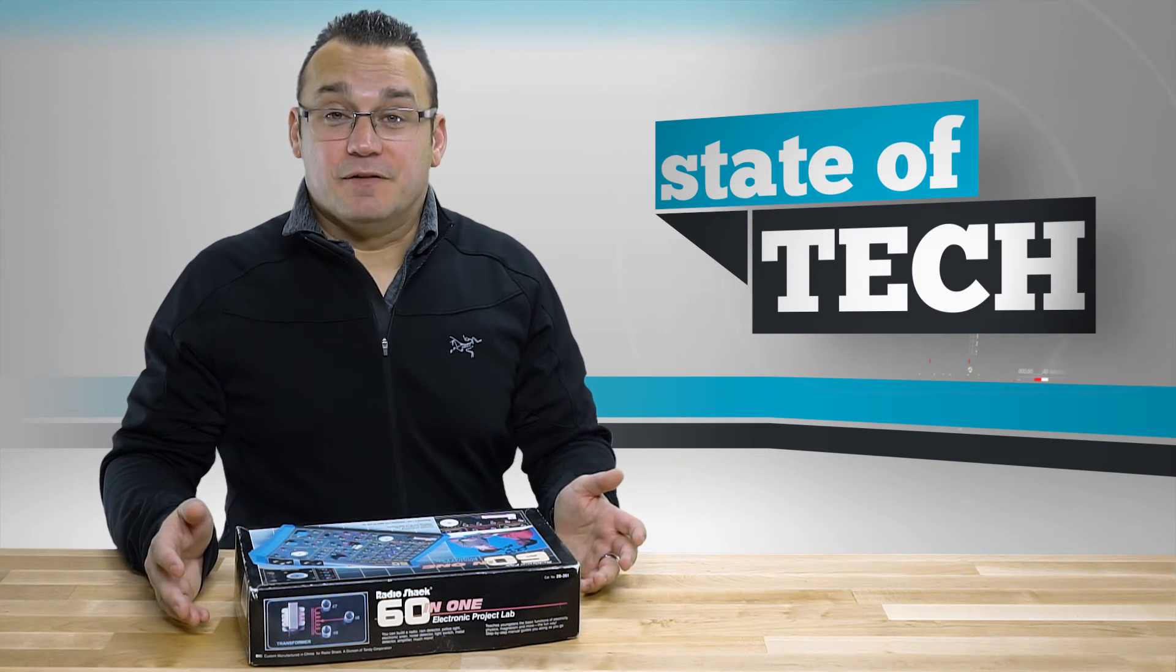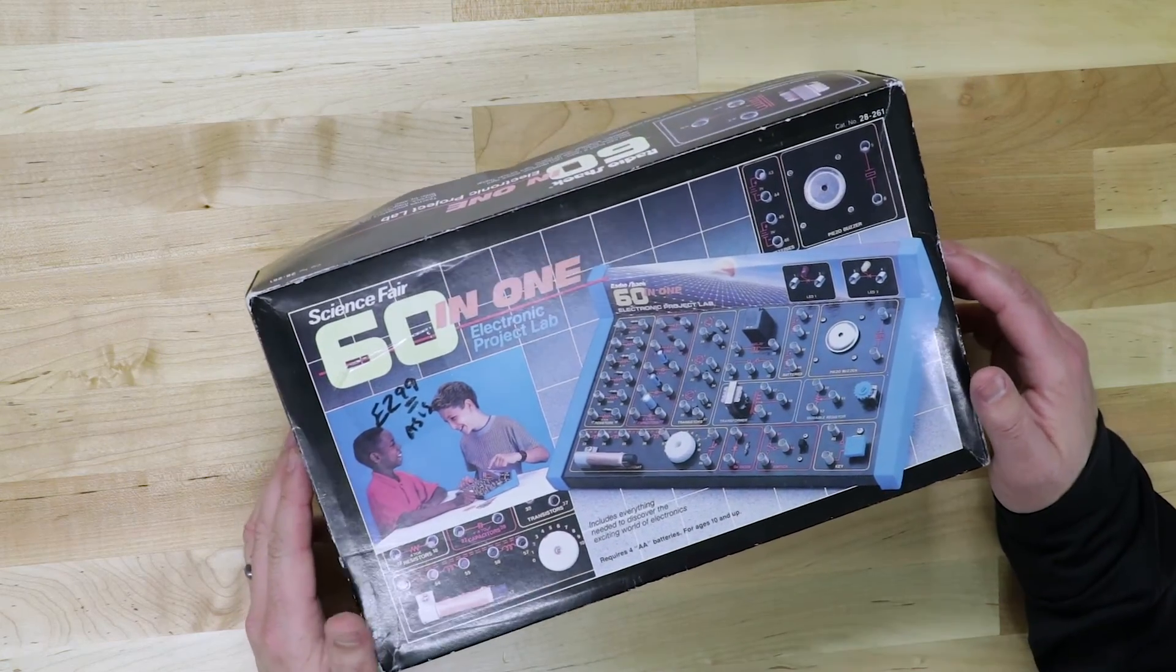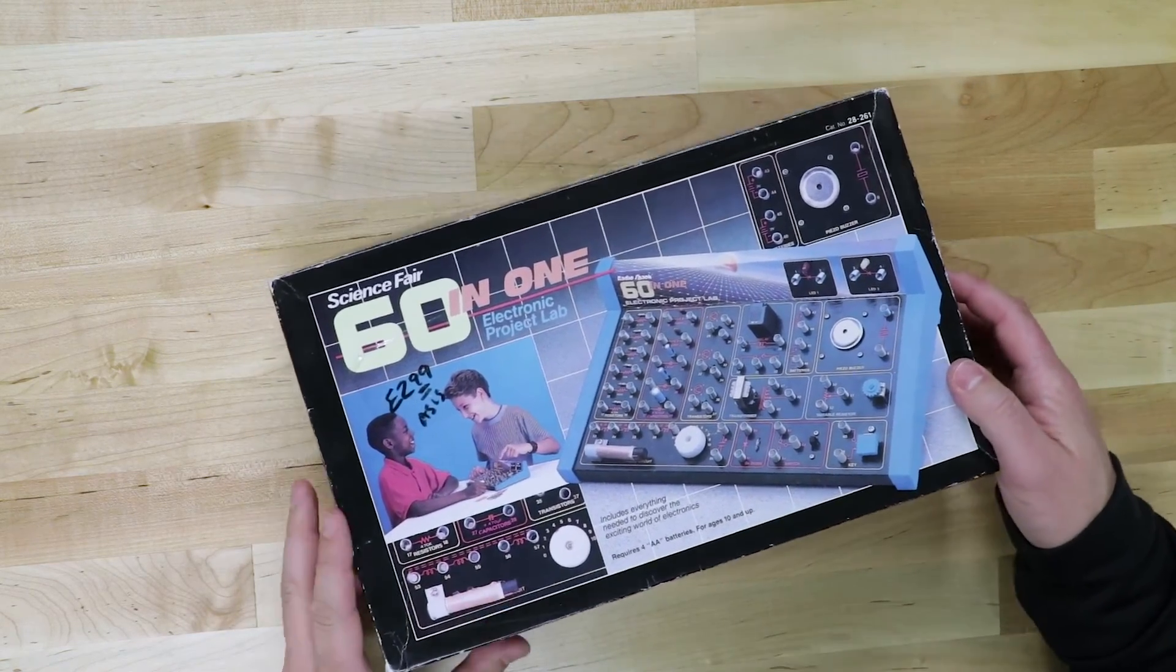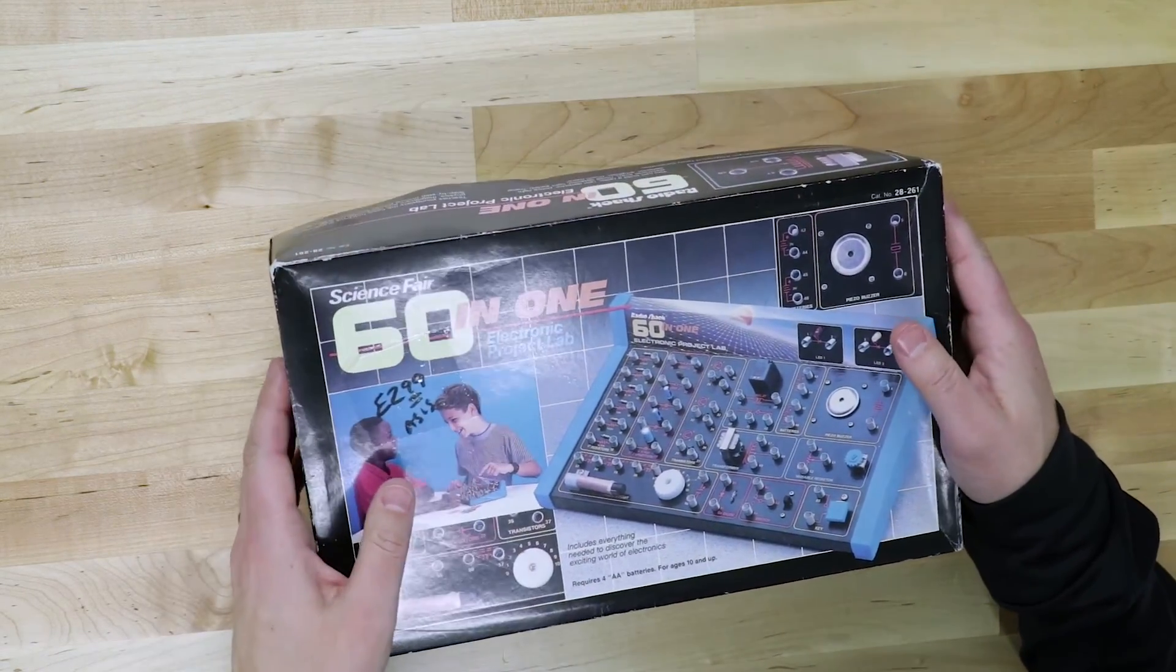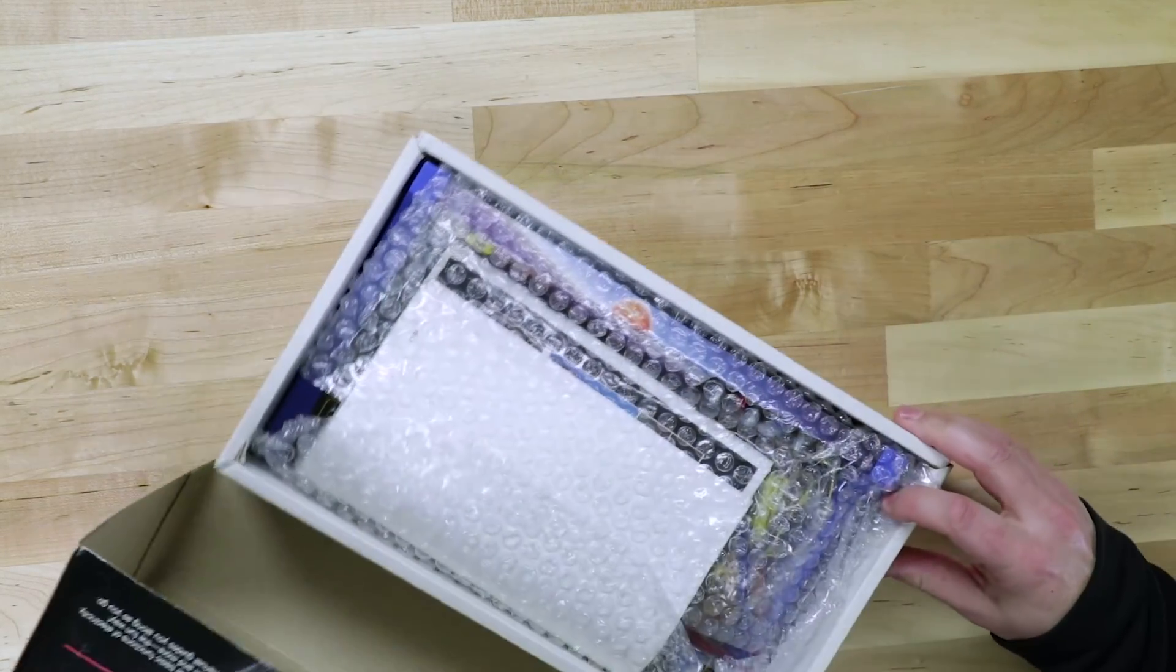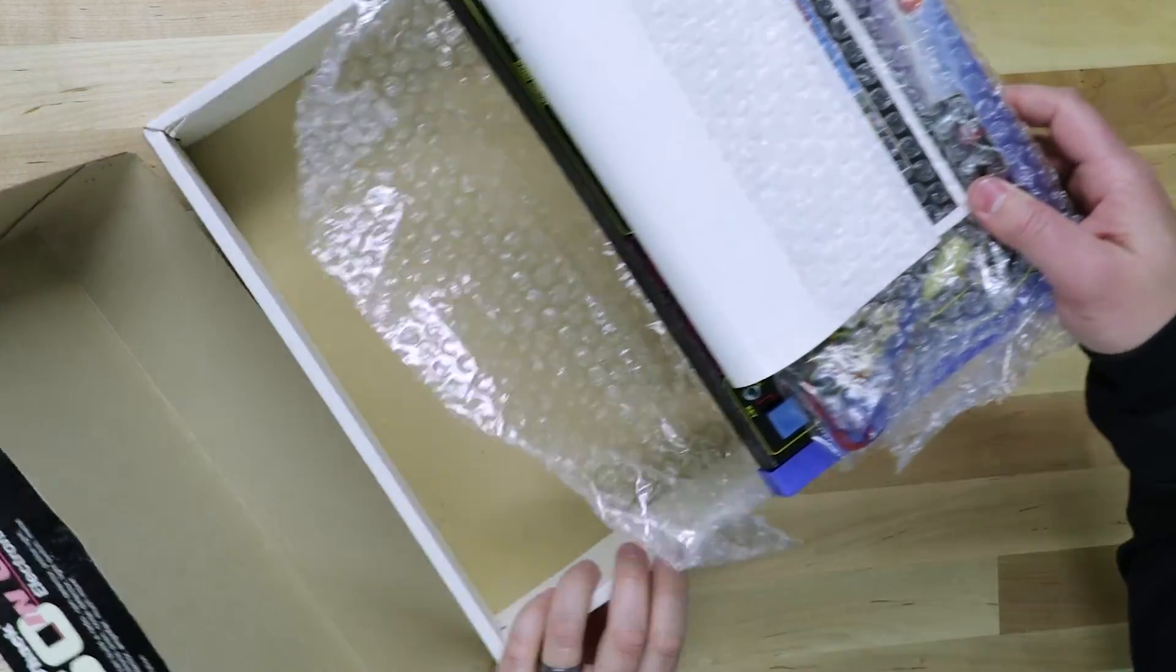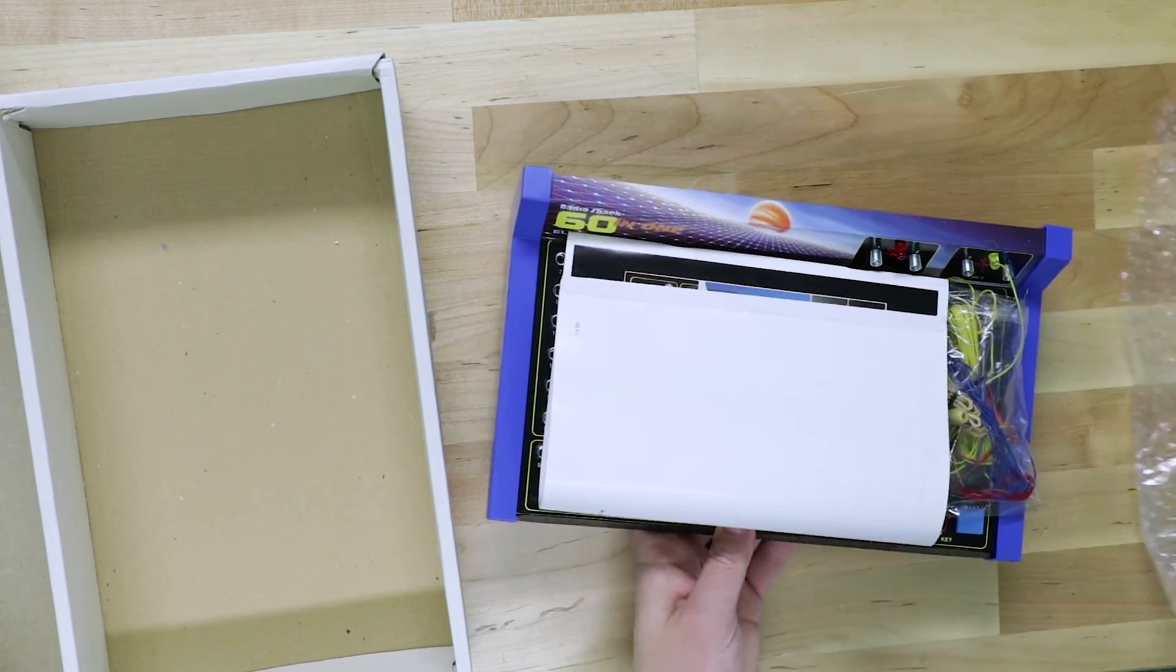So I thought it would be fun to talk about it and unbox it and maybe even do a little project here. Basically what this is, is an electronics lab that lets you build projects using this electronics board. It has different electronic pieces on it and it comes with instructions and wires and all sorts of stuff and it allows you to build these little electronic projects.